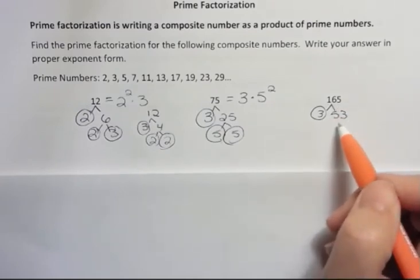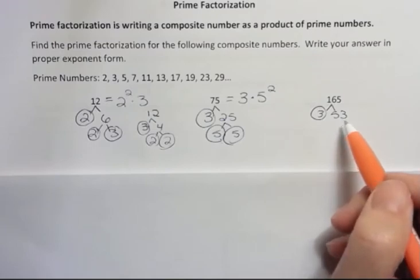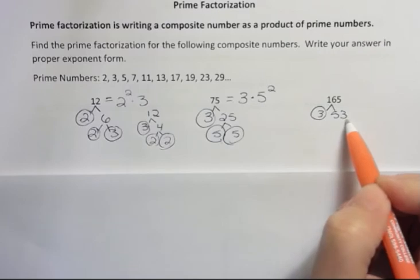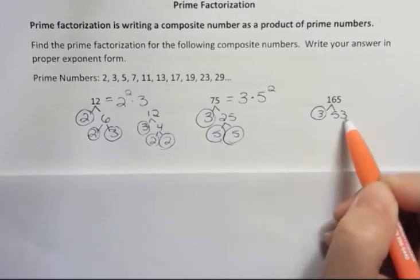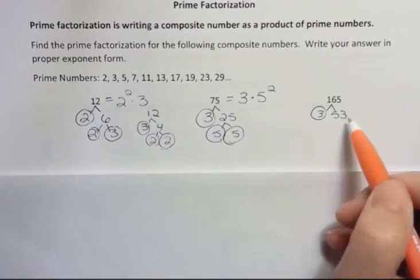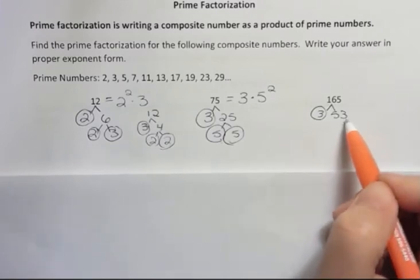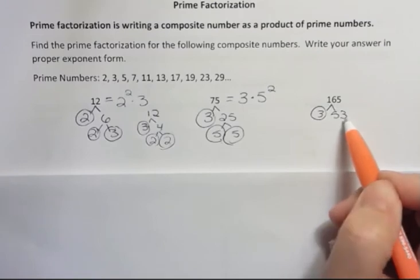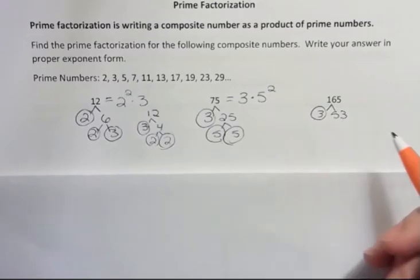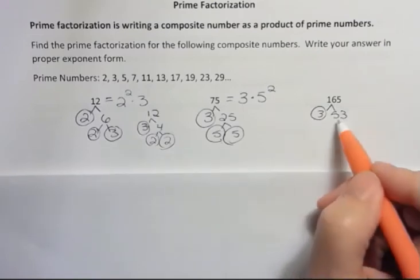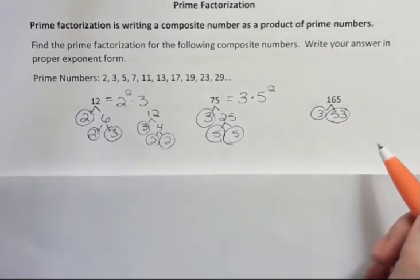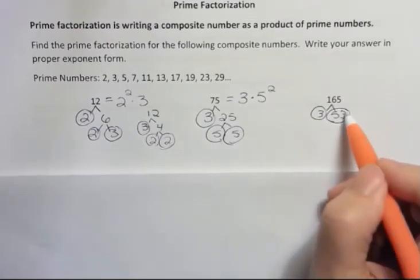Then is 53 a prime number? Well, does 2 go into it? No. Does 3, if I add those up, I get 8, so 3 doesn't go, 4 doesn't go, 5 doesn't go. Remember no even numbers go into odd numbers, so I can kick out 4, 6, 8 and all that. What about 7? 7 times 7 is 49, so that's not going to go. So in fact, that is the prime factorization of that number. It's only this.